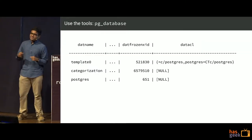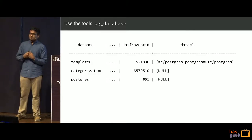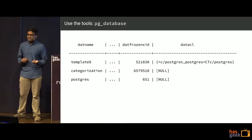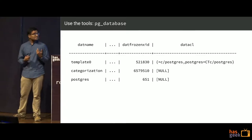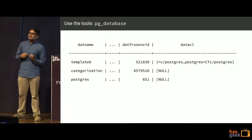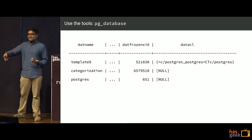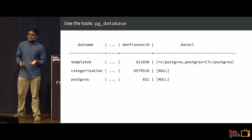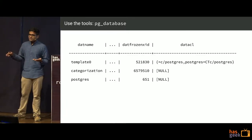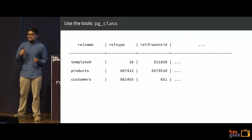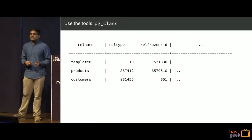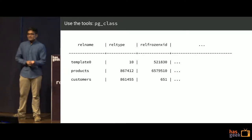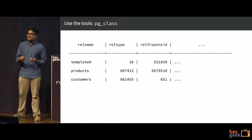We went back to the documentation and looked at pg_database — a system-level table in Postgres giving statistics about the entire cluster of databases. The interesting field is datfrozenxid, which tells you the age of the current relation — your 1.2-billion number. Then we looked at pg_class, which lets us see the specific relations causing the issue. At that point we had a few hundred thousand tables so we had to dig in deep to find these values.